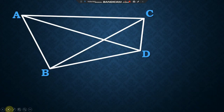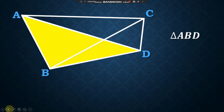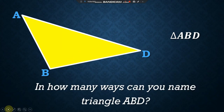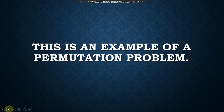Now let's go back to our previous figure and consider triangle ABD. In how many ways can you name triangle ABD? This is a good example of a permutation problem. Remember that the three letters used to name the given triangle can be rearranged to form other names for the same triangle. Therefore, the order of the letters matters in this specific problem. That is why we can use the permutation formula to solve it.